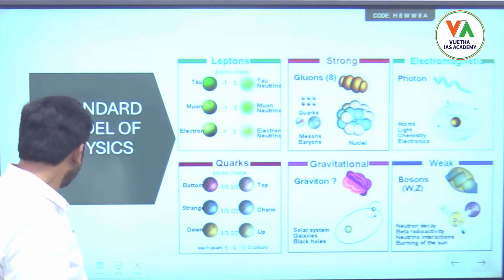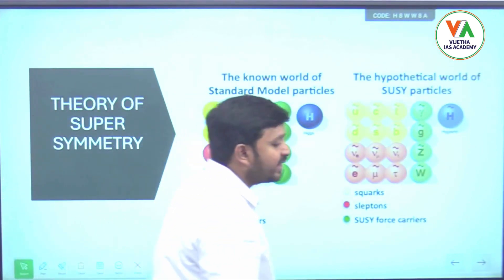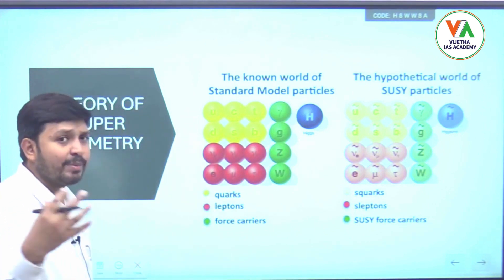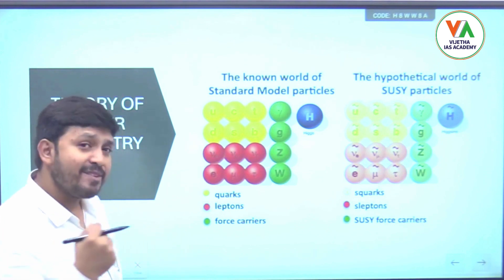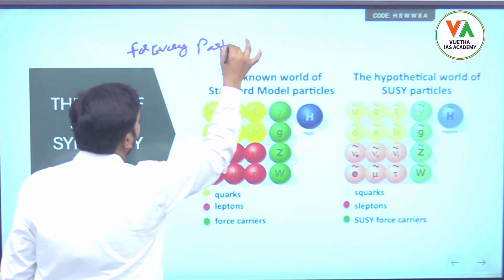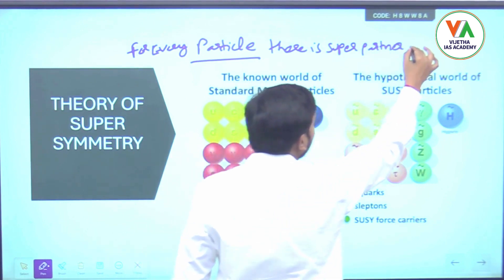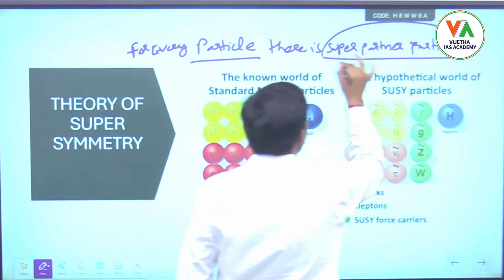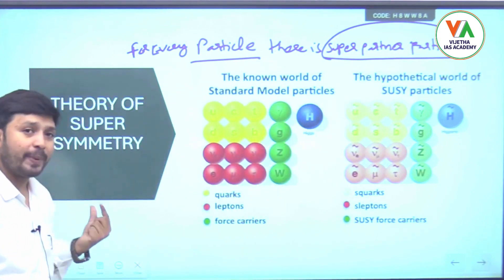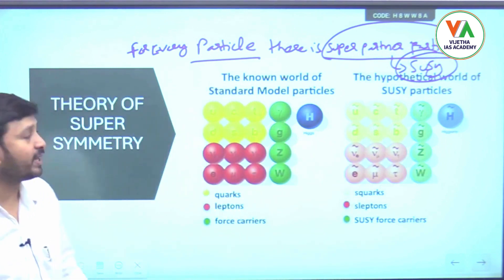Now we will see the second theory, called the theory of supersymmetry. This is one of the toughest theories, very difficult to remember. According to this theory, for every particle there is a superpartner particle. These superpartner particles are called SUSY particles.